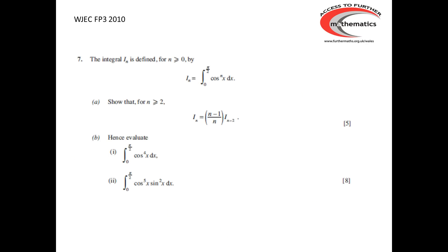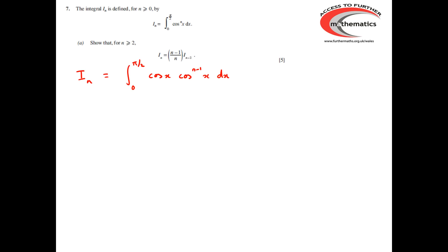Our second example comes from the 2010 paper and looks at the integral between 0 and π/2 of cos(x) to the power n dx. We'll start off by trying to set up the recurrence relation. We've got I_n as the integral of cos(x) to the power n dx, and cos(x) to the power n we can split as being cos(x) times by cos(x) to the n minus 1. We're going to integrate the cos(x) and differentiate the cos(x) to the n minus 1.